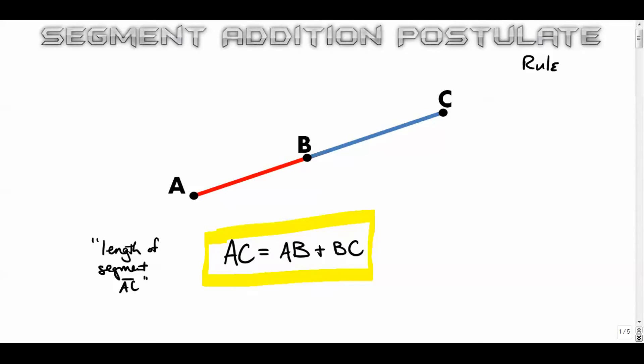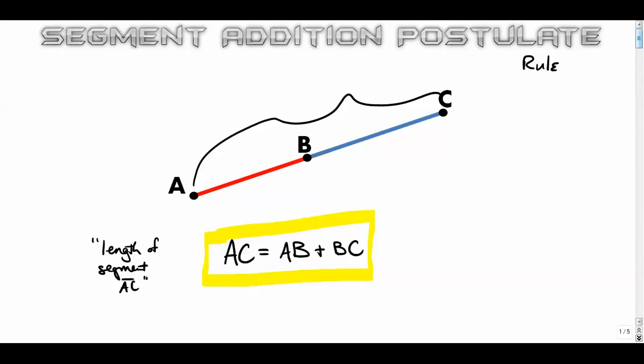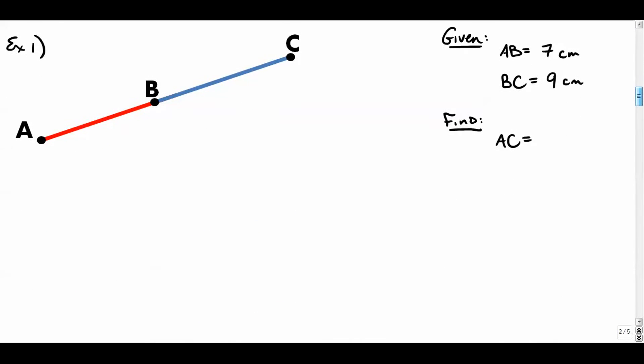In theory, it basically just means that if you have a big segment, it is the sum of its parts. Pretty simple. So let's try a couple here. We'll go increasing complexity, number one.